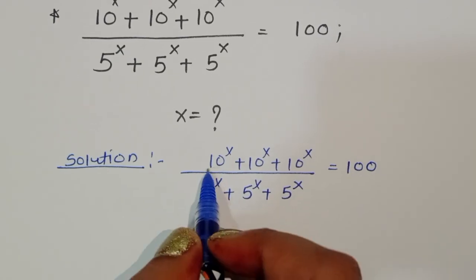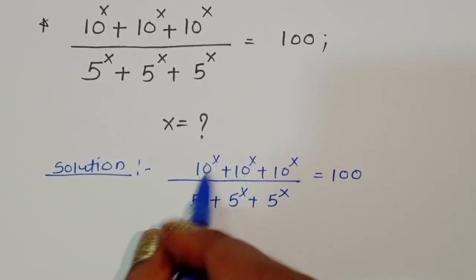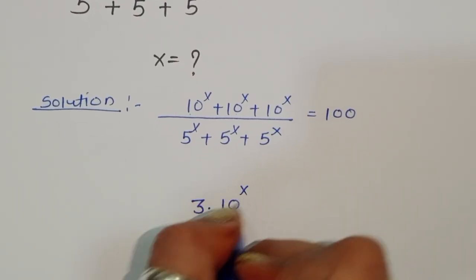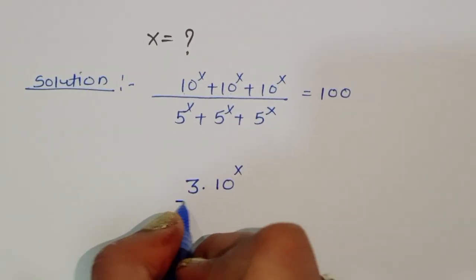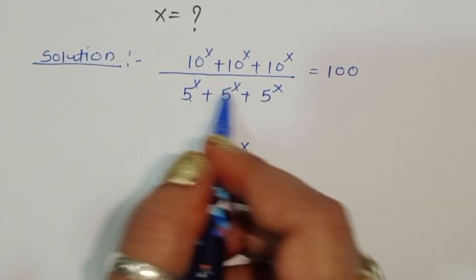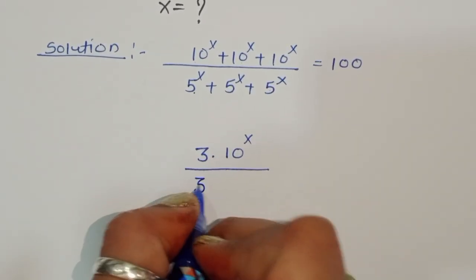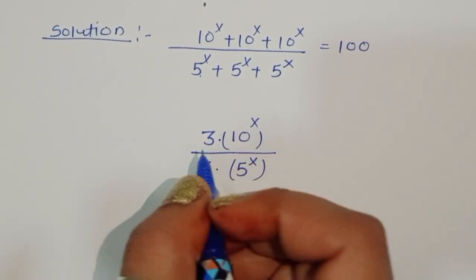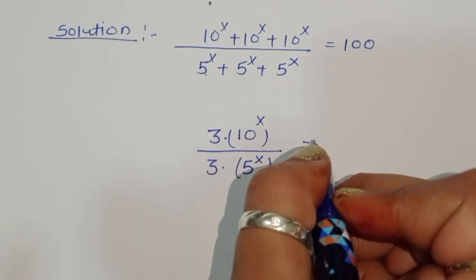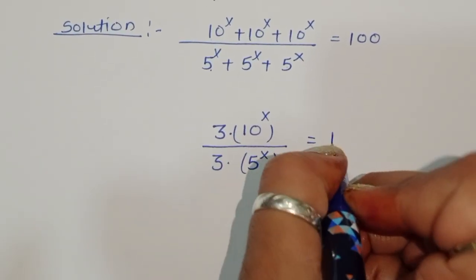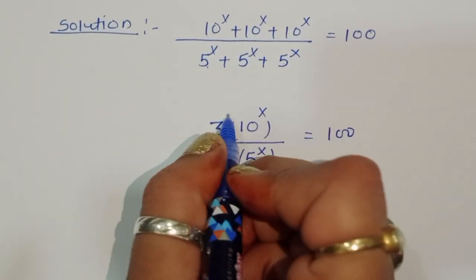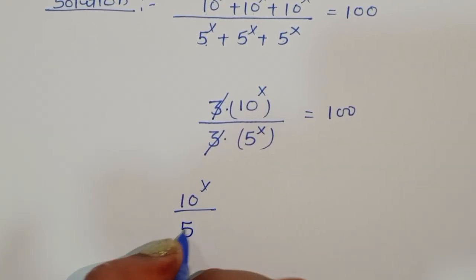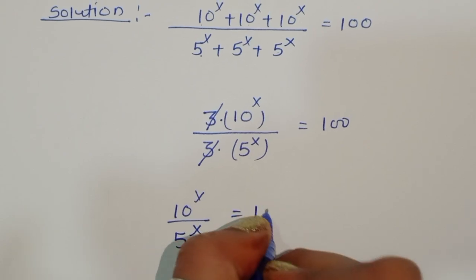We have 10^x + 10^x + 10^x in the numerator, which we can write as 3 times 10^x, divided by 3 times 5^x in the denominator. The 3s cancel, so we get 10^x divided by 5^x is equal to 100.